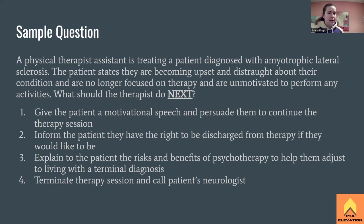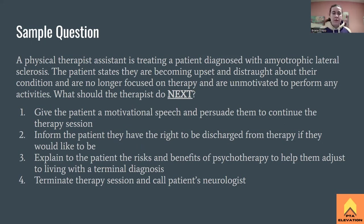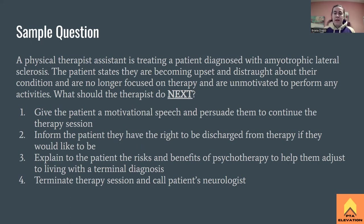Sample question: A physical therapist assistant is treating a patient diagnosed with ALS. The patient states they are becoming upset and distraught about their condition and are no longer focused on therapy and unmotivated to perform any activities. What should the therapist do next? One: give a motivational speech. Two: inform the patient they have the right to be discharged. Three: explain the risks and benefits of psychotherapy for adjusting to a terminal diagnosis. Four: terminate the session and call the neurologist.